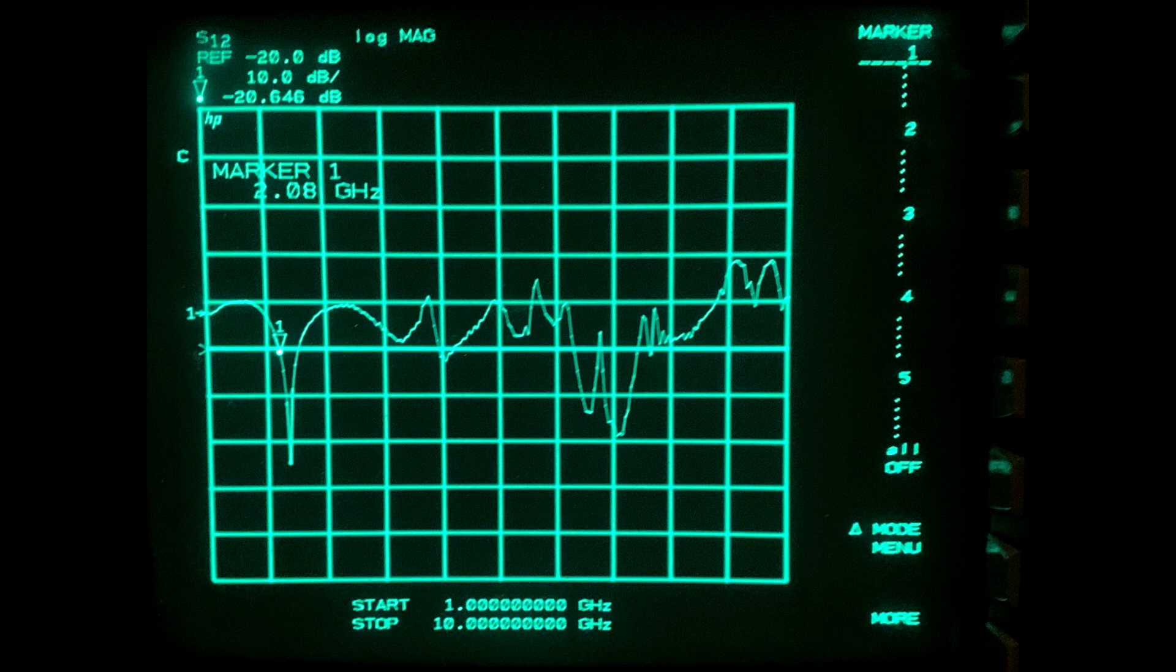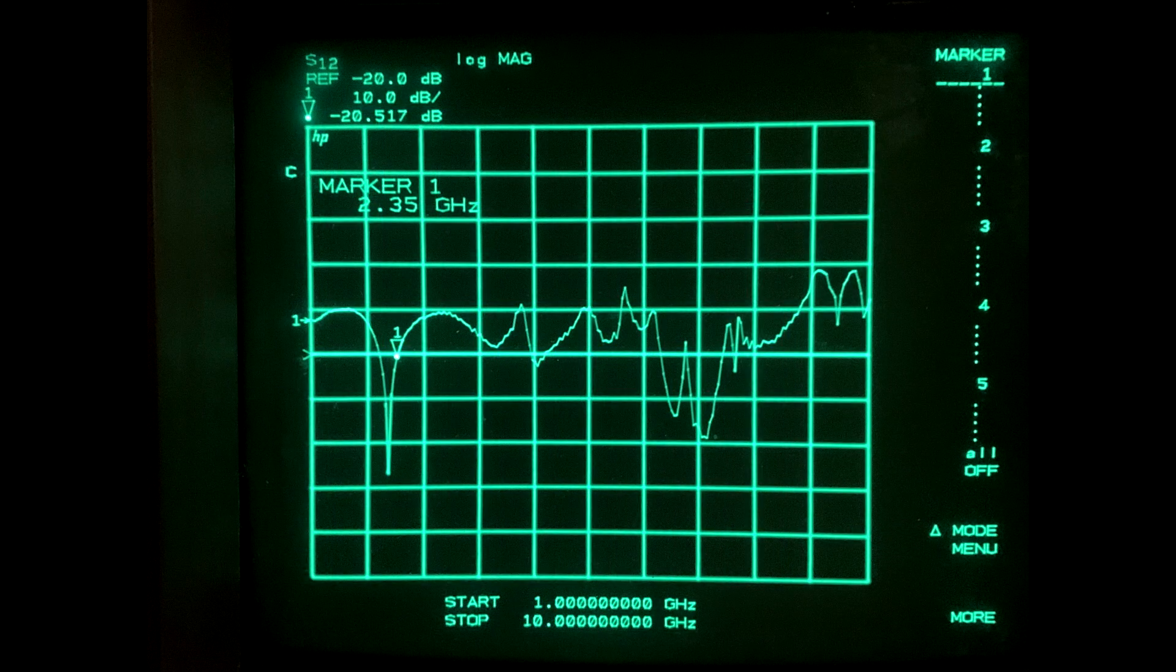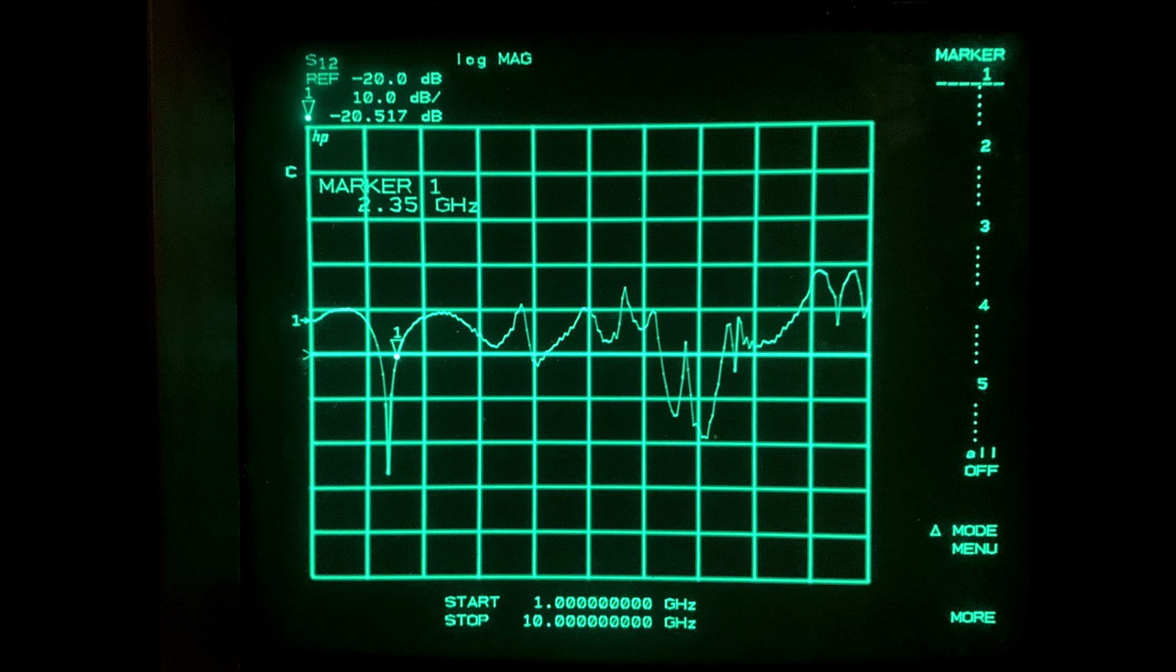Here I've moved the marker to 2 gigahertz so we can see how wide it is. This is 2.35 gigahertz. It's not very wide at all, so it's very good at what it was designed to do, but it's not a broadband isolator.